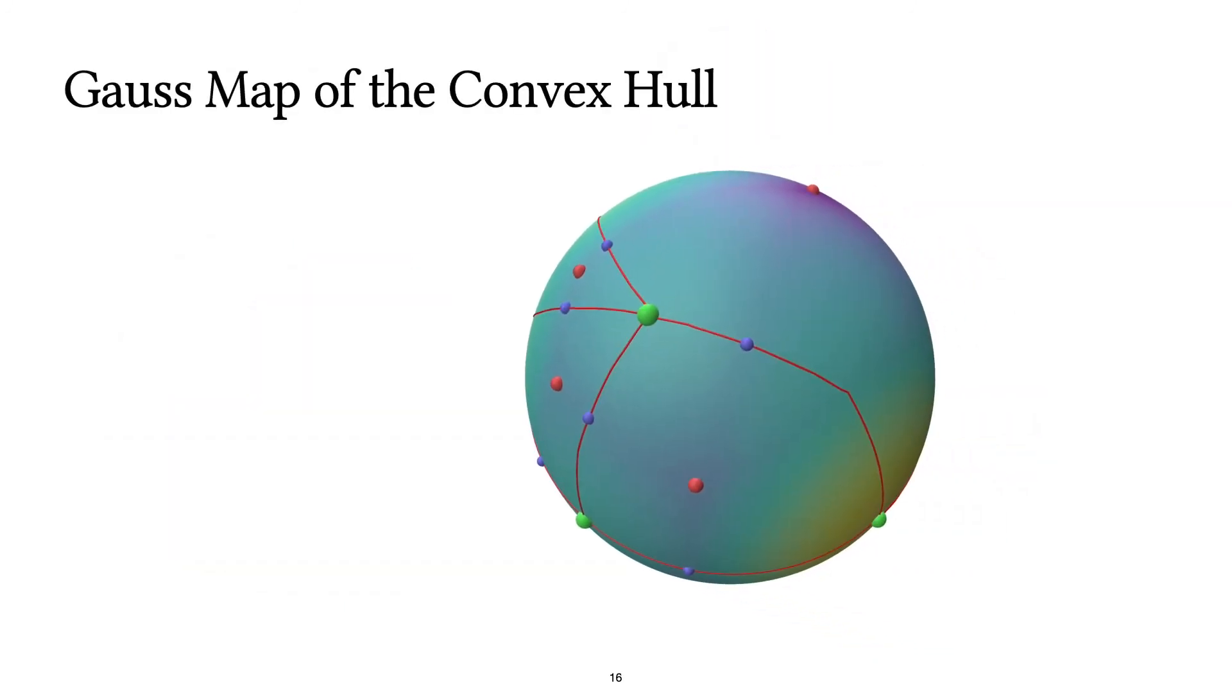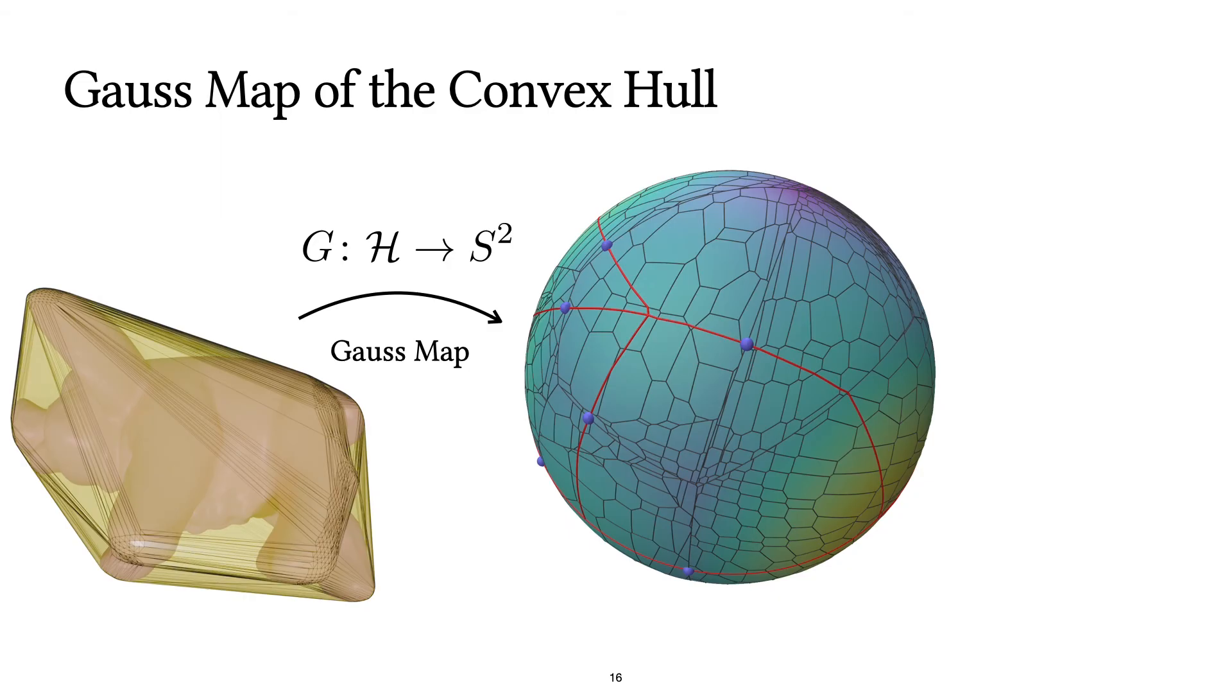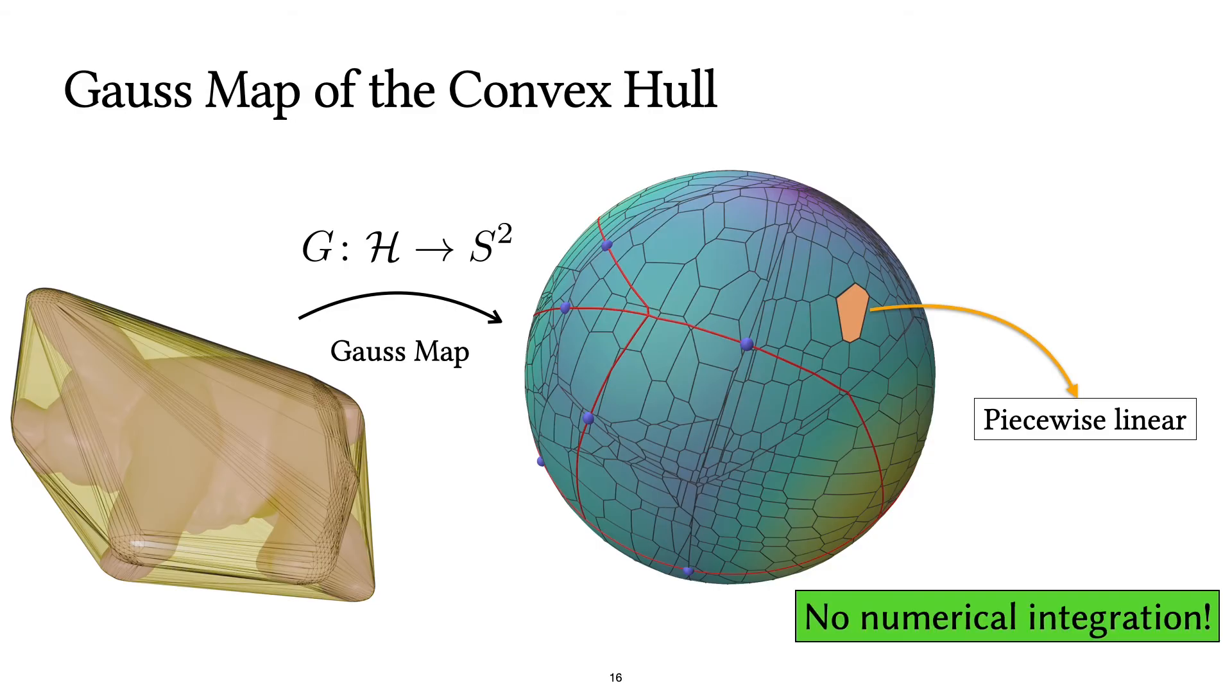To compute this structure and follow the gradients, instead of using numerical integration and taking step sizes, we use a special structure of this function that carries over from the Gauss map of the convex hull of the input. Intuitively, in every Gauss map patch, our function behaves linearly, and that means we can follow the gradients without the need for numerical integration and in an exact manner.